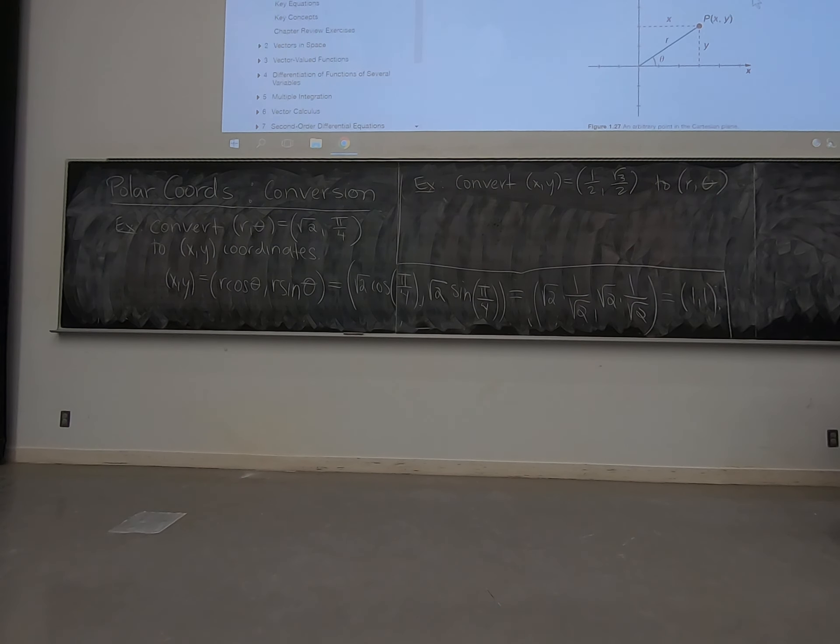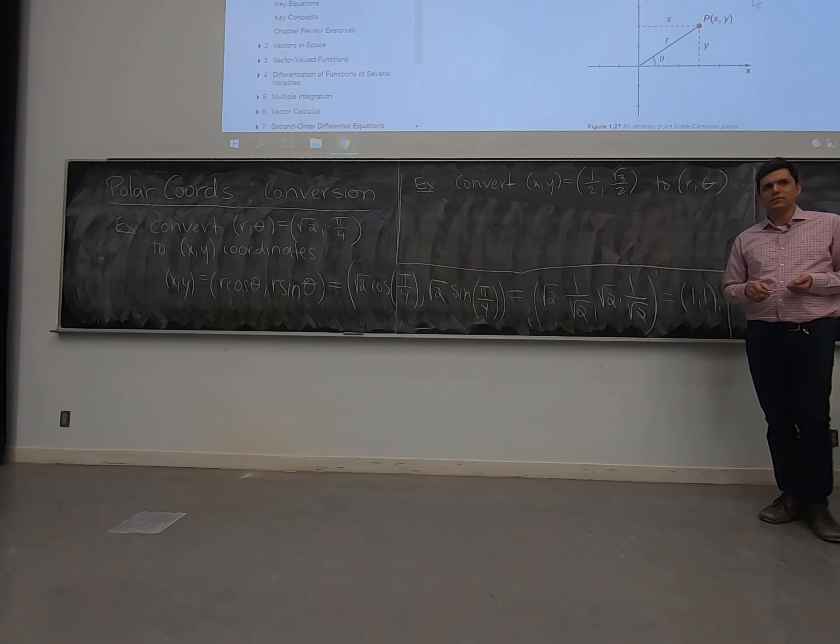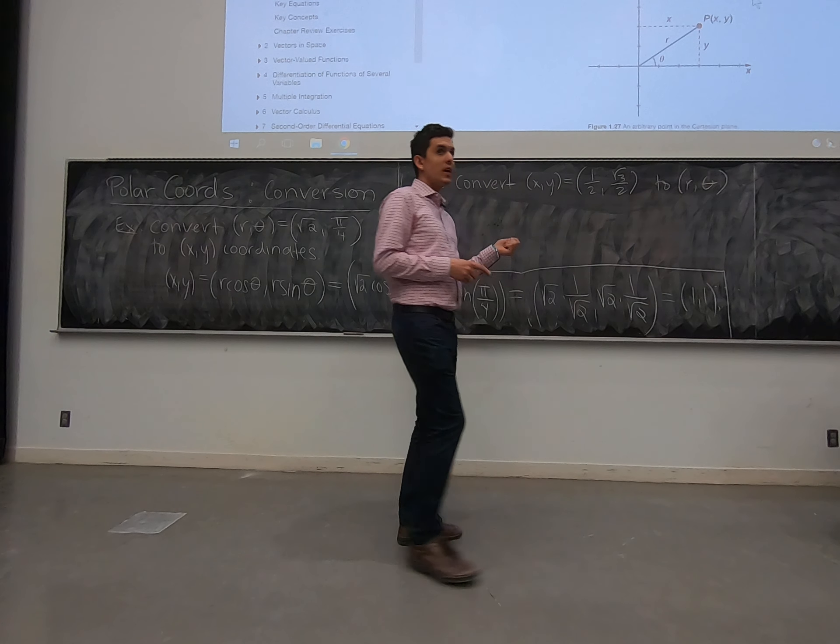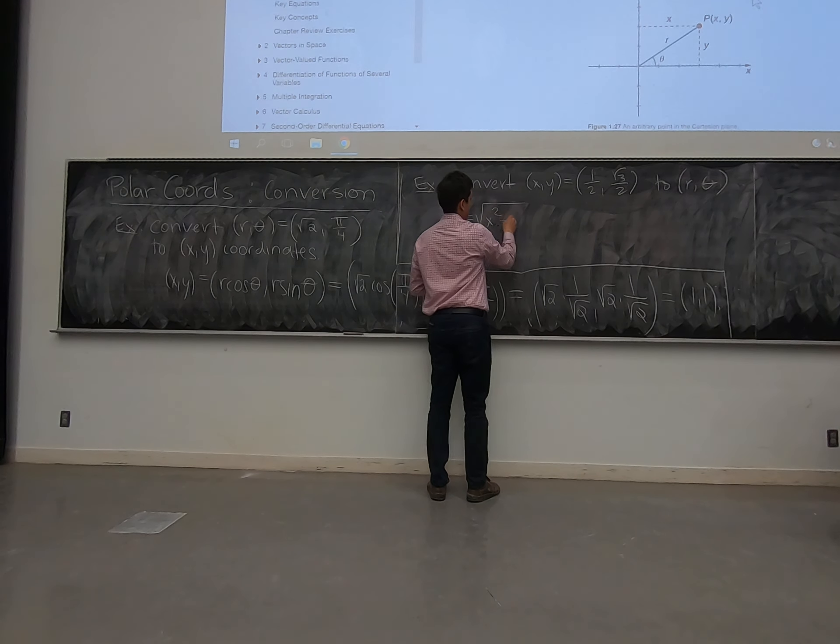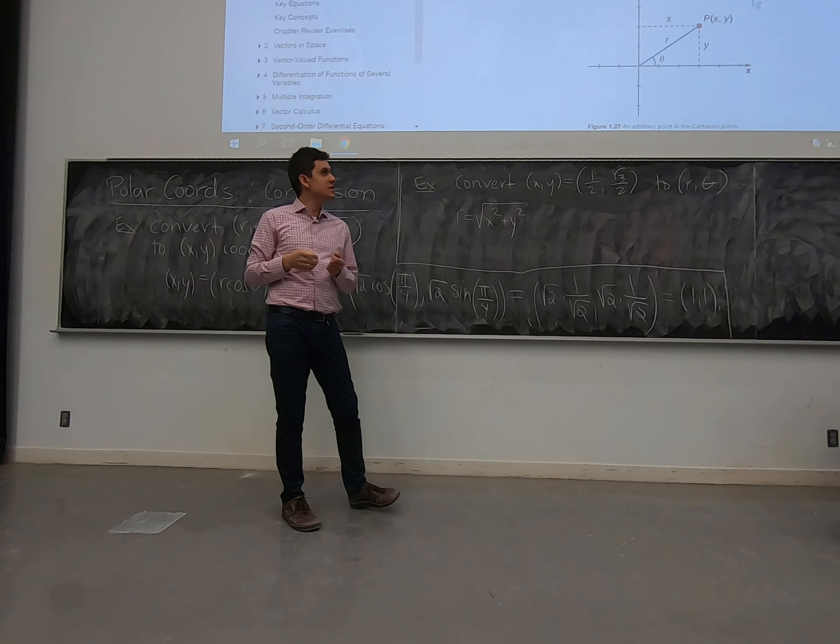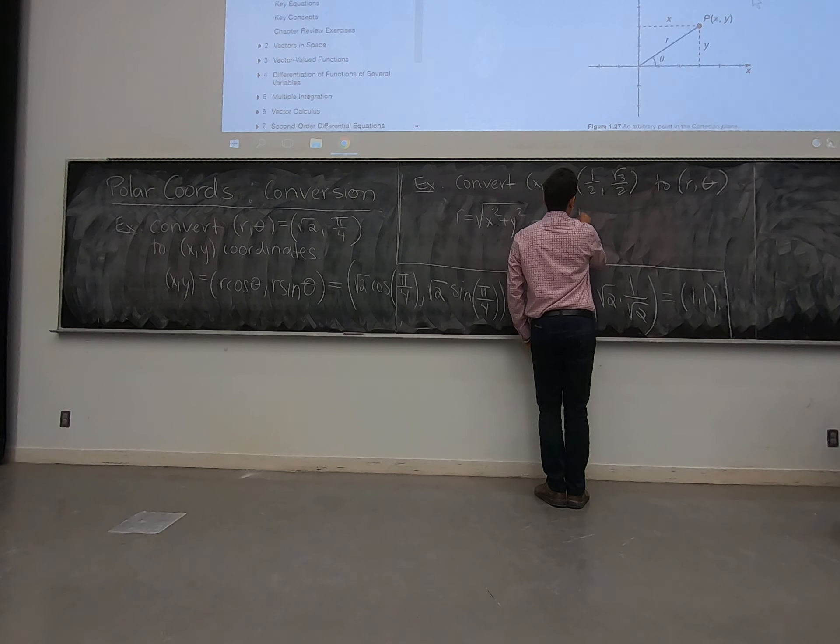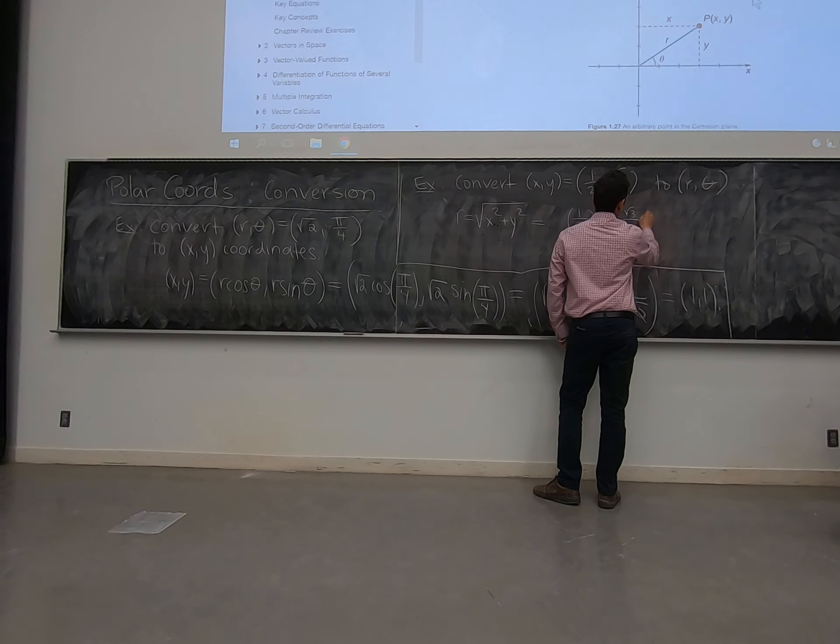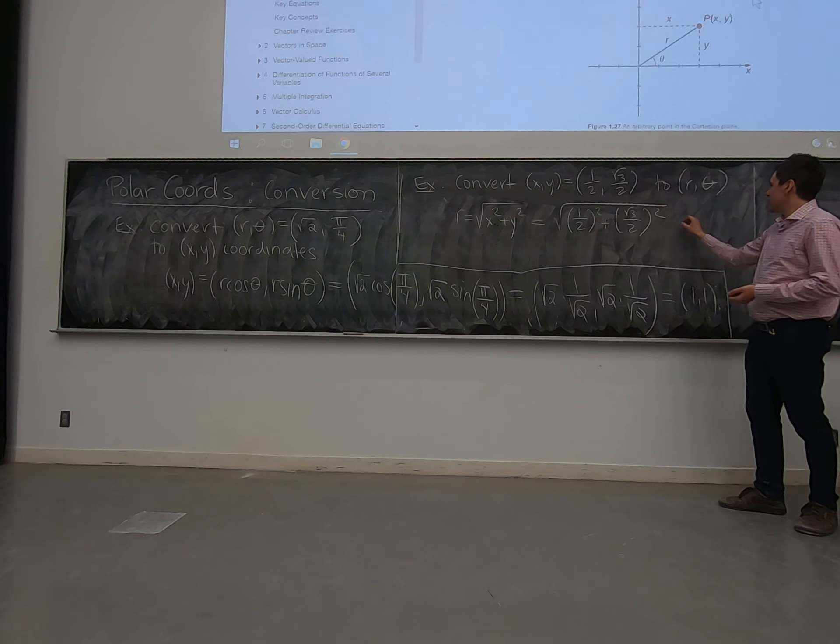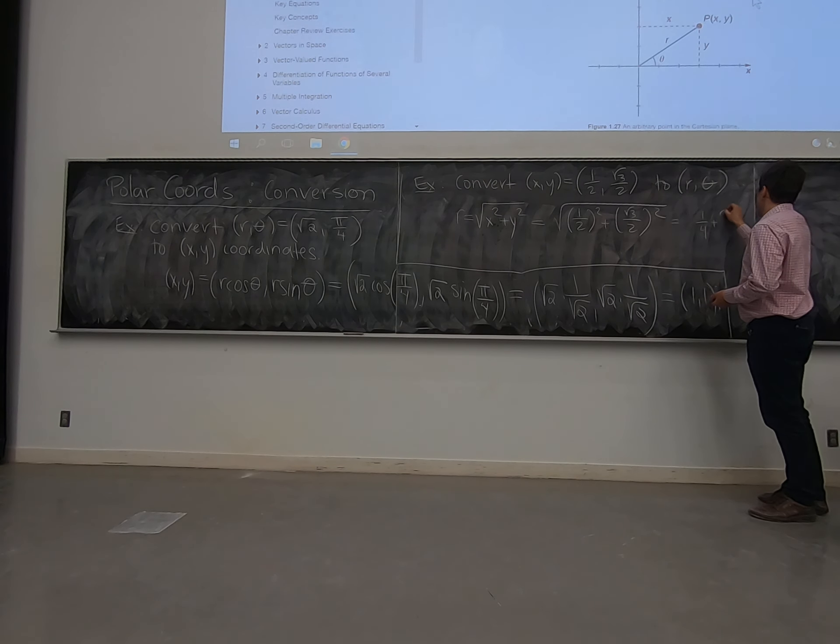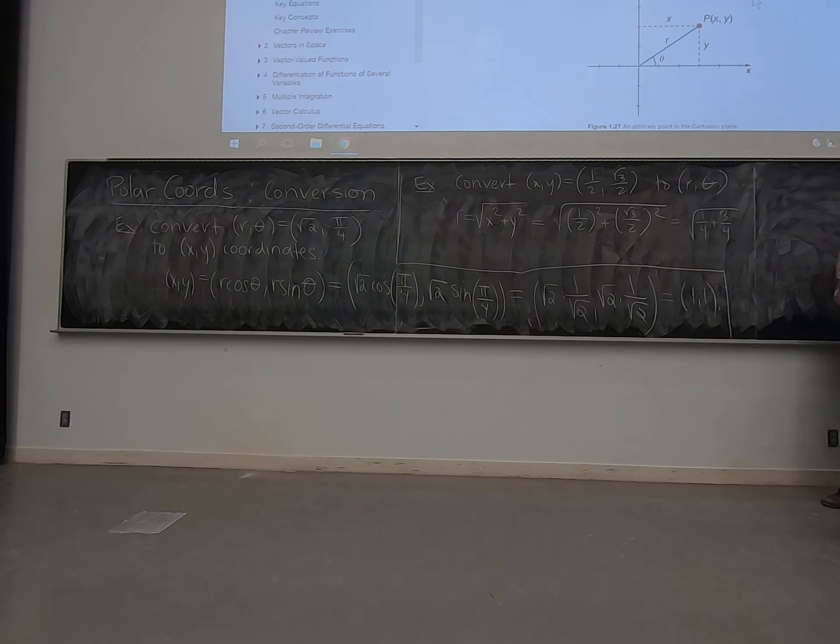So we'll get the radius. The radius formula is always the same - we measure the distance to the origin. A quarter plus three quarters adds up to one, so we get radius equals one.